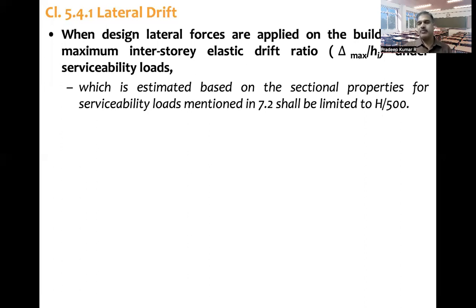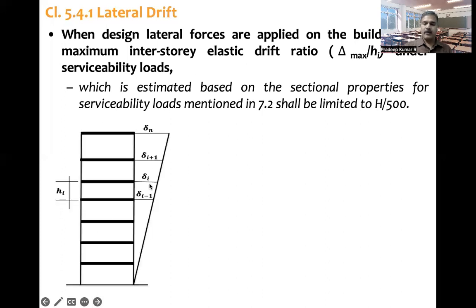H by 500 means H is the total height of the building divided by 500, but actually this refers to total displacement. The value should actually be expressed as 1 by 500 — not H by 500. So according to the definition, delta-max divided by H under serviceability loads shall be limited to 1 by 500.